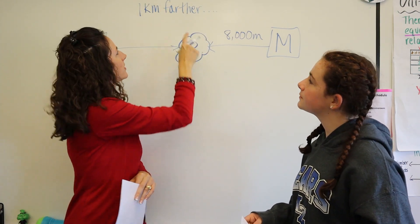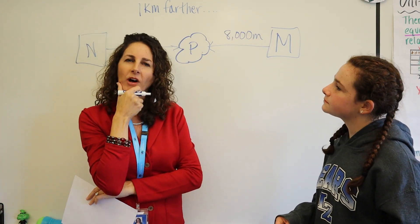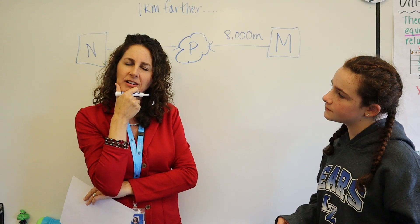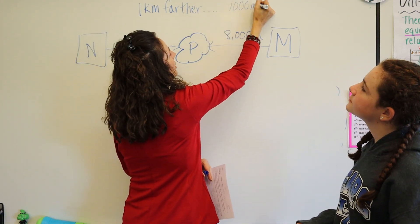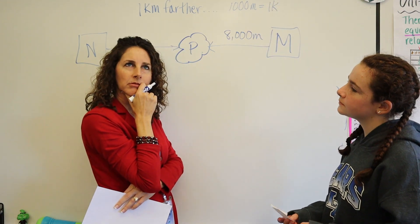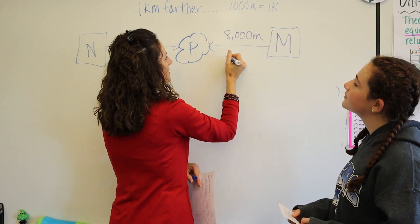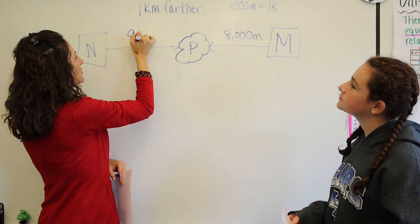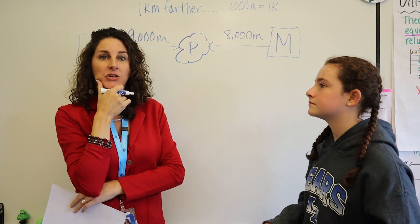Now I'm noticing this is in meters and this is in kilometers. So I think I have to think about a conversion there. I think there's 1,000 meters is equal to 1 kilometer. So I think I would just add 1,000 onto there. So Noah lives 9,000 meters from the park.